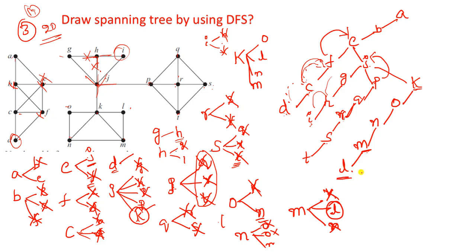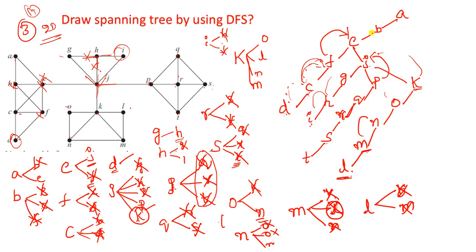Stop here and backtrack to M - no pending. Backtrack to N - no pending. Backtrack to O - no pending. Backtrack to K - no pending. Backtrack to J, then to E, then to B, and finally back to root node A. There are no elements pending - all vertices have been visited.